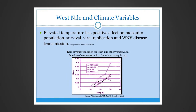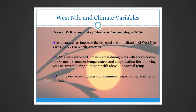Elevated temperature has a positive effect on mosquito populations, rates of viral replication, and West Nile virus disease transmission. This image depicts the rate of virus replication for West Nile virus and two other viruses as a function of temperature within two Culex host mosquitoes, showing an increased rate of replication as temperature rises. A 2006 study found that West Nile always dispersed into new areas during years with above-normal temperature, and activity decreased during cooler summers, primarily in northern latitudes.